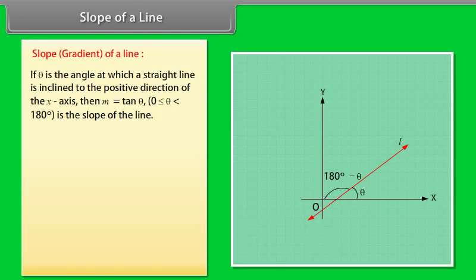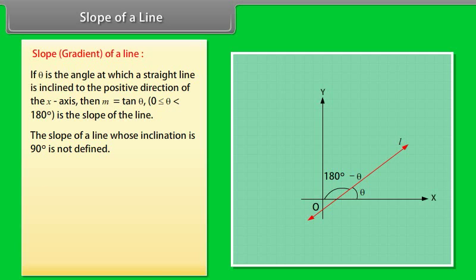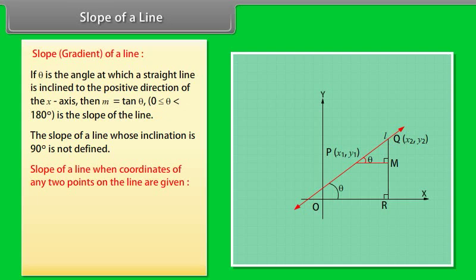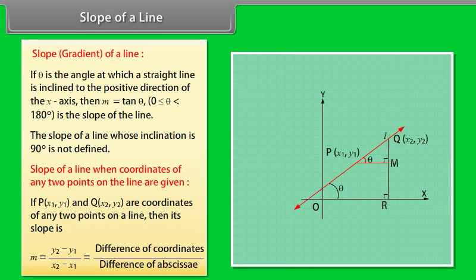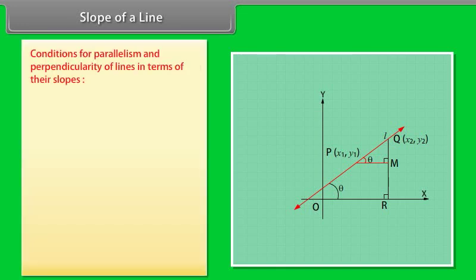Slope of a Line: The slope or gradient of a line — if theta is the angle at which a straight line is inclined to the positive direction of the X-axis, then M = tan(θ), where 0 ≤ θ < 180°. The slope of a line whose inclination is 90° is not defined. When coordinates of any two points on the line are given, if P(X1, Y1) and Q(X2, Y2) are on the line, then its slope is M = (Y2 − Y1)/(X2 − X1), the difference of ordinates divided by the difference of abscissae.